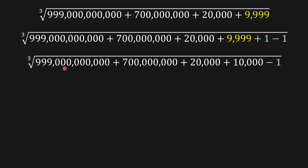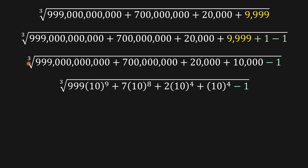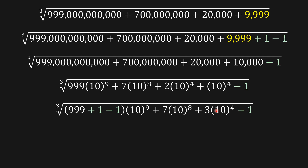Now I'm going to write all these numbers as powers of base ten multiplied together. We have eight zeros here, eight zeros, four zeros, and four zeros. Three times ten to the power of four. Then for nine hundred and ninety-nine, I'm going to add one and subtract one here.